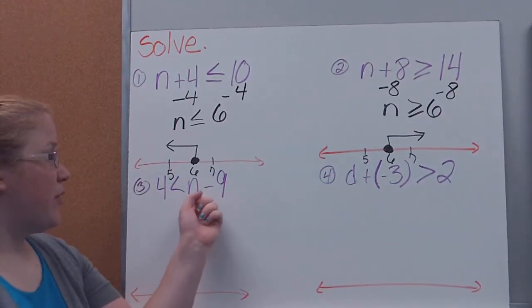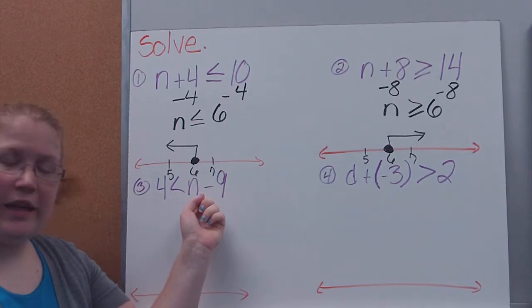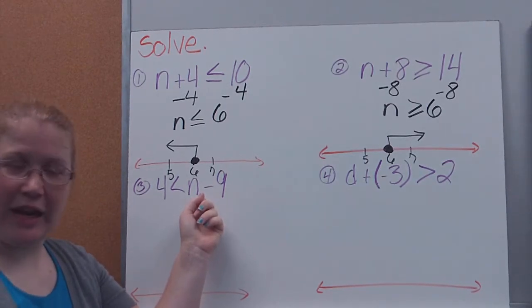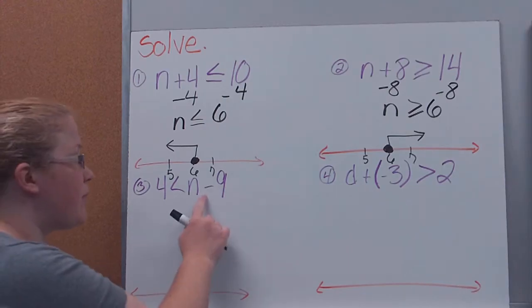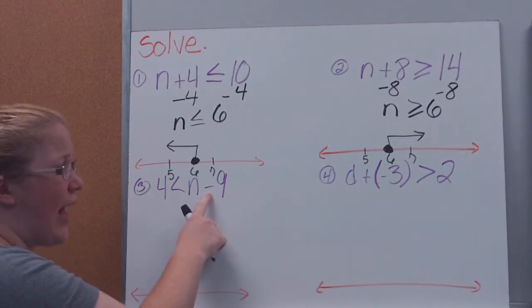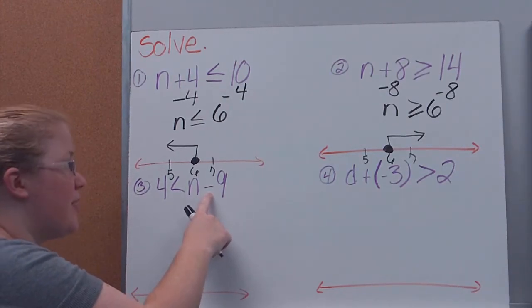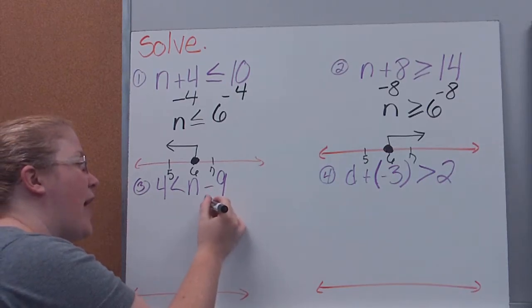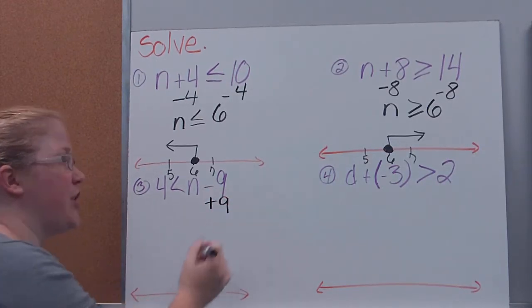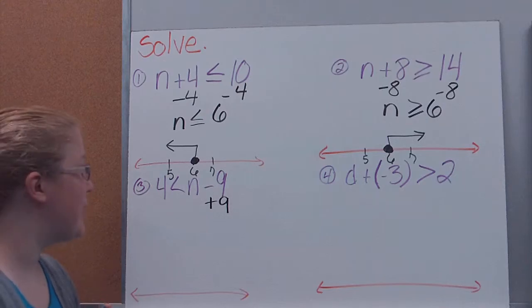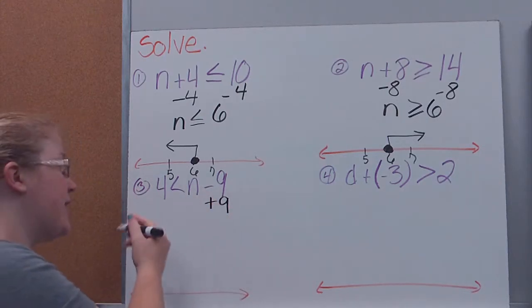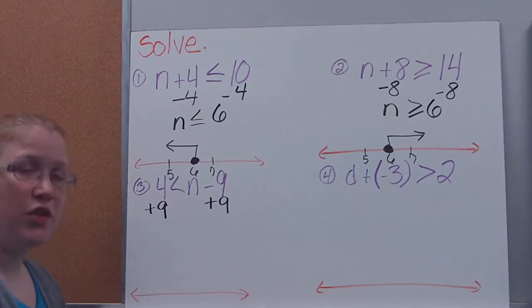Over here you'll notice our variable is on the right and not on the left, which means we can't use the trick of following the arrow. It's going to face the opposite direction. But if we look here, what operation is happening to my variable? Subtraction. So how do I undo that? I want to use the inverse operation, so I need to add 9 to get it by itself. Since I've added 9 to this side, I need to do the exact same thing to the other side, to keep it balanced. Even though it's an inequality, we need to keep it balanced.